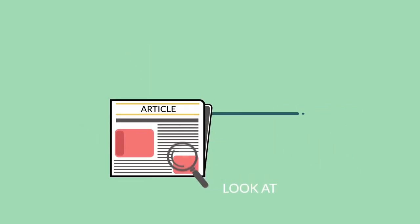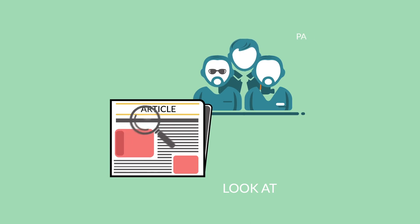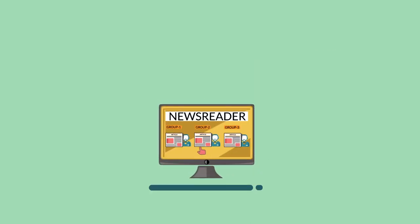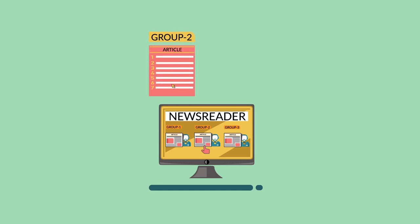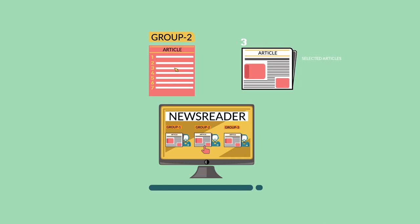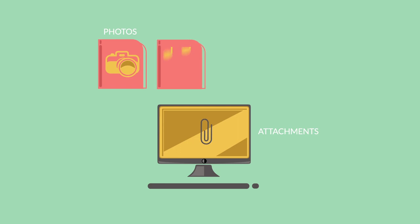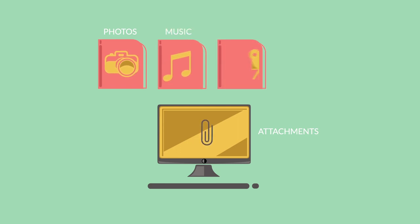When you want to look at the articles within a particular news group, you tell the newsreader which news group you want to read, and it displays a summary of all the articles from that group. Then you can select the ones you want to read. You can also have an attachment to an article, which can hold any type of data like photos, music, videos, and software.